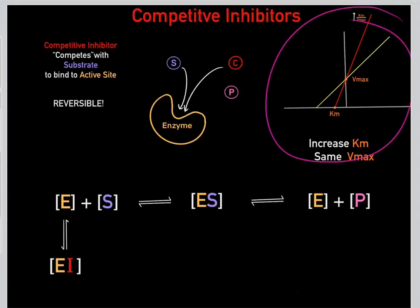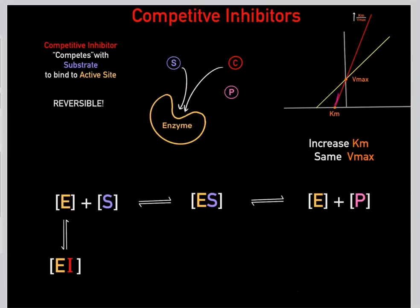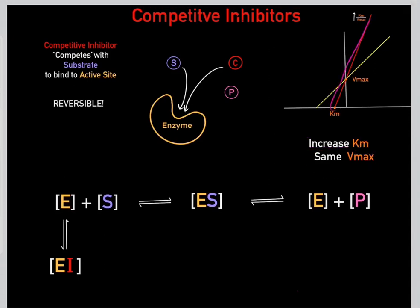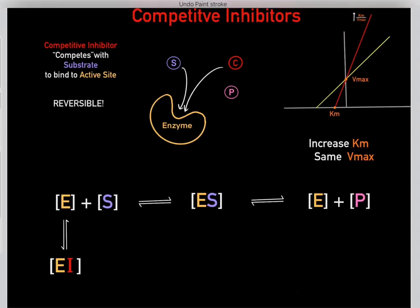On the Lineweaver-Burk plot, this line represents normal conditions without inhibitor. Once you add a competitive inhibitor, the KM increases and the Vmax stays the same. Under those conditions, the slope — which is KM over Vmax — increases. In the next video, we'll go into more detail on what KM and Vmax mean.